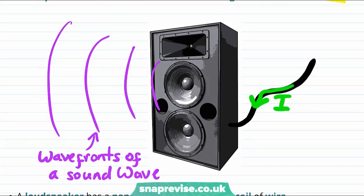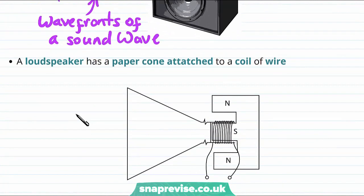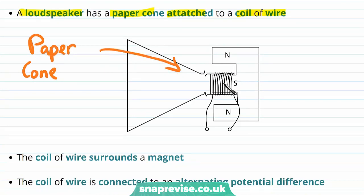Before we talk about how a loudspeaker works, let's see a diagram of a basic loudspeaker. A loudspeaker consists of a paper cone attached to a coil of wire. So here is our paper cone, and it is fixed or attached to a coil of wire.